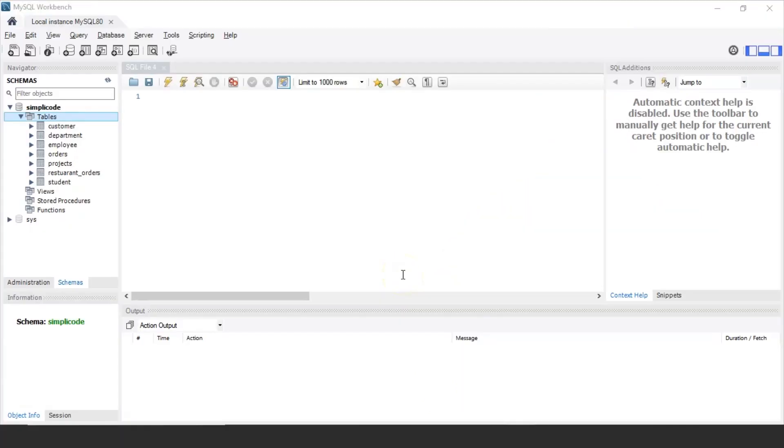So as you can see MySQL Workbench has started. Now in order to execute the GROUP BY and ORDER BY statement we'll consider the dataset of an employee which I have already downloaded from Google. So let me just import the dataset into the MySQL Workbench.